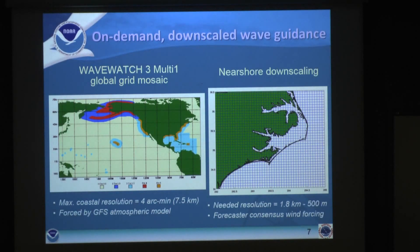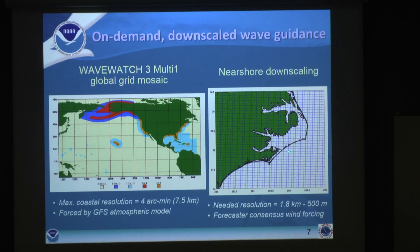We run this on global grids — a grid spanning a half-degree resolution across the globe, reducing toward the coastline down to seven and a half kilometers or four arc minutes, done in a two-way nesting sense. So if a wave system goes over the Hawaiian Islands, it downscales to the islands and refeeds back onto the coarse grid. However, if you zoom in at the scale of one of our forecast offices, the actual resolution of seven and a half kilometers is not nearly enough to resolve any coastal processes. For example, at an inlet where a small craft wants to go in and out, you've got one grid point to compute all of that. Clearly that's not sufficient.